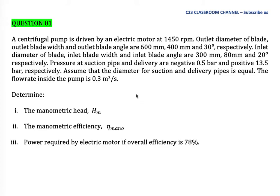A centrifugal pump is driven by an electric motor at 1450 rpm. The outlet diameter of blade, outlet blade width, and outlet blade angle are 600 millimeters, 400 millimeters, and 30 degrees respectively.